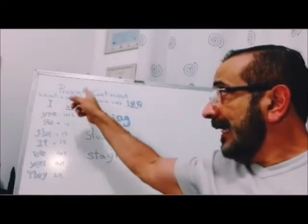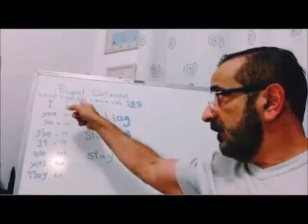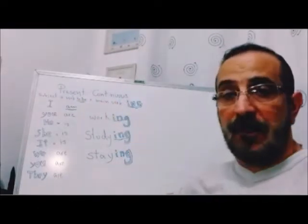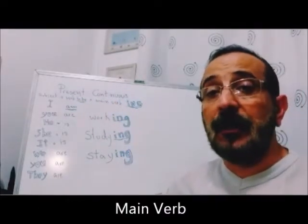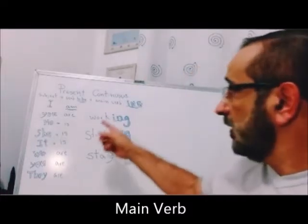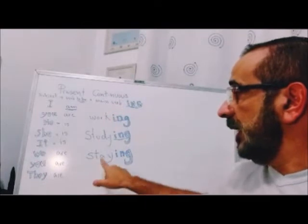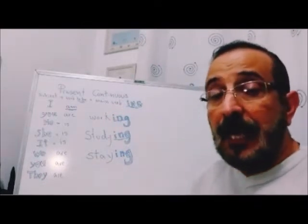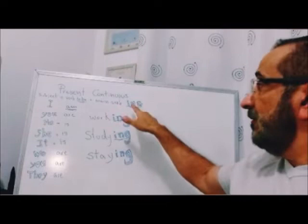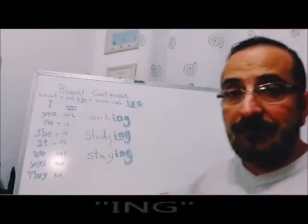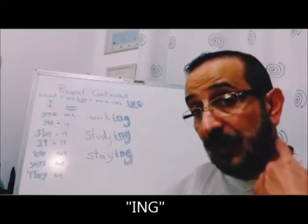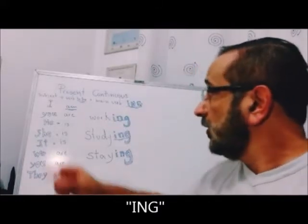Porém, além do subject plus verb to be, nós vamos precisar também plus main verb — que é o verbo principal, aquele que vai realmente expressar a ação. No caso aqui, nós temos o verbo work, study, and stay. Mas eu preciso acrescentar a esse verbo o -ing — para fazer o indo, endo, ando do português.